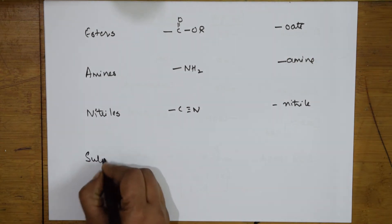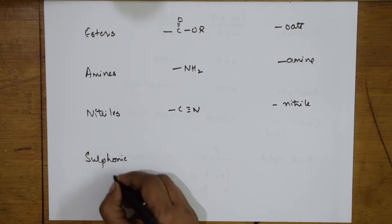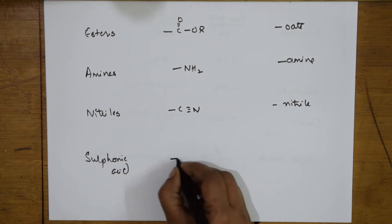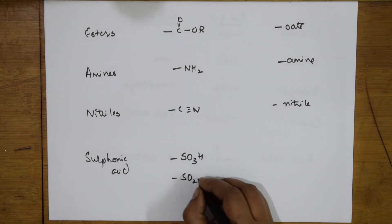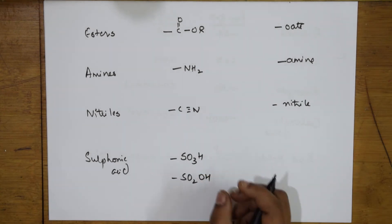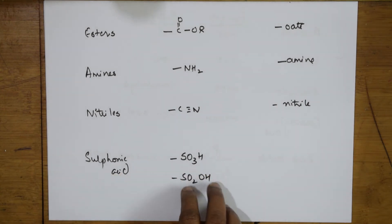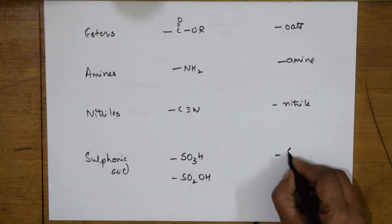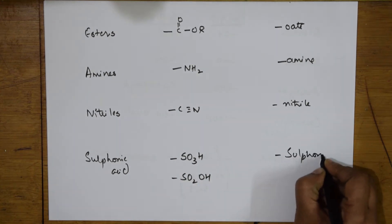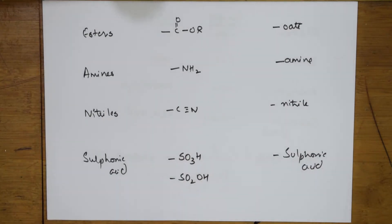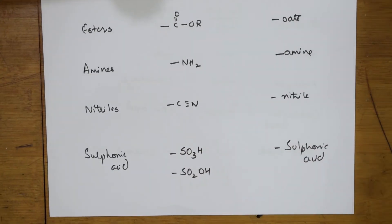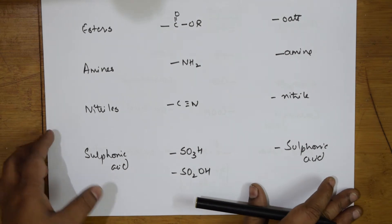Suppose if you have sulfonic acid — it is basically SO3H, which you can also write as SO2OH. If you see this group, you end the suffix as 'sulfonic acid'. First, whenever you are learning, try to practice this table and learn it. Without this basic data, you cannot write or name the compound.